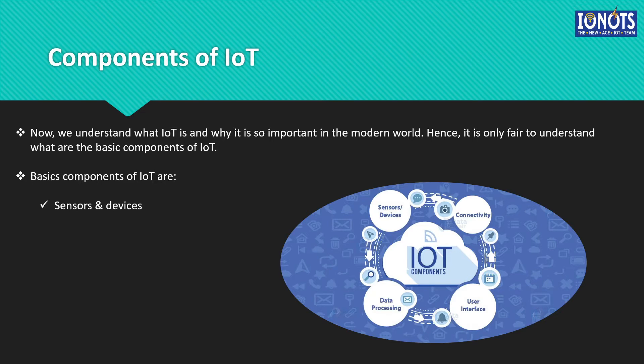But that does not mean that a device is a sensor in itself. For example, the smartphones we use today are devices which are capable of doing multiple functions other than just sensing the environment, but they have many sensors installed in them which help perform all their functions. So in a nutshell, the function of this component and the first step in IoT is collection of data from the environment.